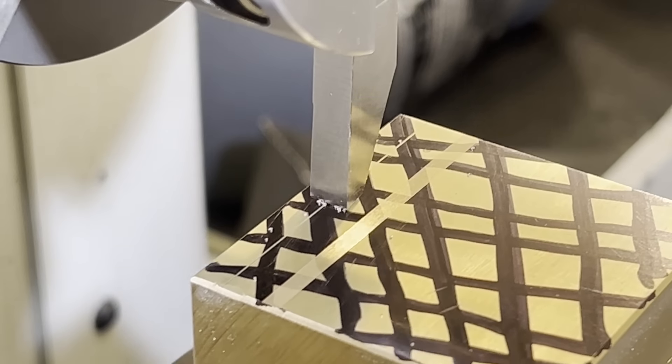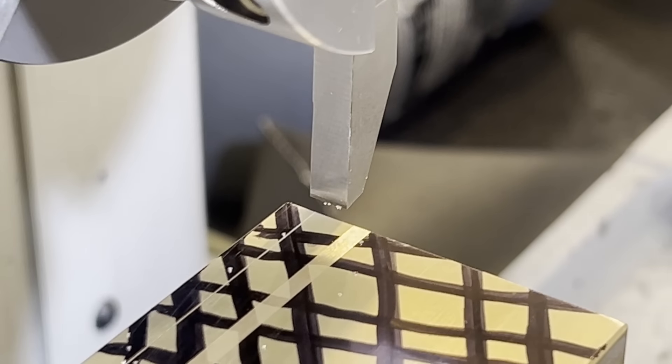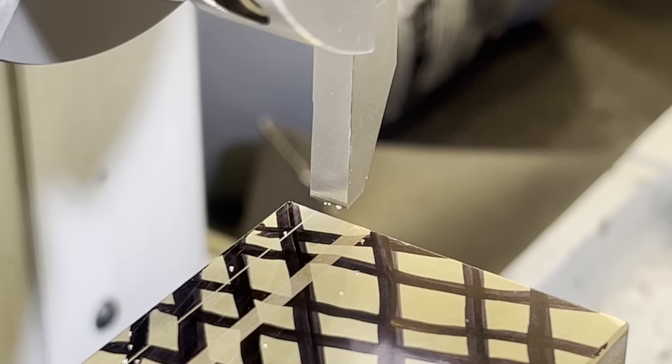We're taking 4 tenths or 10 microns per pass. And yeah, you still get a nice chip curling up off. And then that slot just kind of sinks down in there.